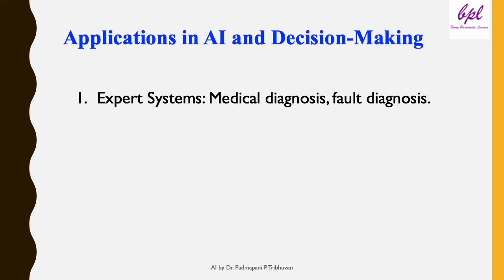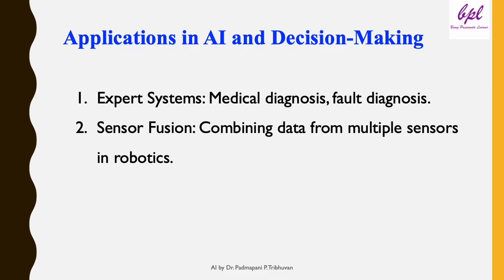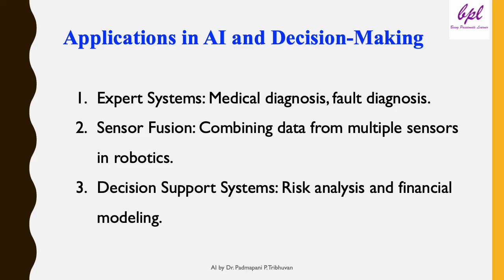Applications in AI and decision making: DST finds applications in various fields. In expert systems, it aids in tasks like medical or fault diagnosis. In robotics, it is used for sensor fusion, combining data from multiple sources. DST is also valuable in decision support systems for handling uncertainty in areas like risk analysis and financial modeling.